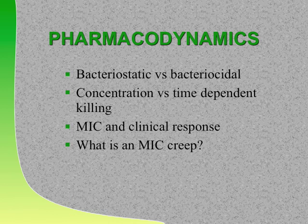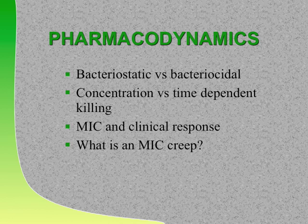What is MIC creep? MIC creep is something we've noticed with Staph aureus, including MRSA: as the MIC starts to creep up toward 2.0 from 1.0 and 0.5, the failure rate goes up. Therefore, vancomycin is more likely to fail when the MIC for Staph aureus or MRSA is 2.0. You need to watch the MIC to determine if the drug is going to work, especially for Staph aureus.